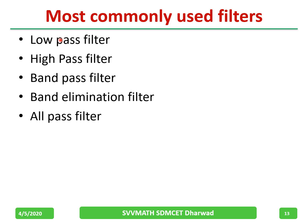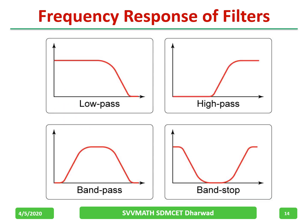The most commonly used filters are low pass filter, high pass filter, band pass filter, band elimination filter, and all pass filter. These are the frequency responses of the filters. Low pass has a passband and a stopband. High pass passes only high frequencies — it initially rejects, then passes. Band pass passes a band of frequencies, and band reject or band stop rejects a band of frequencies.